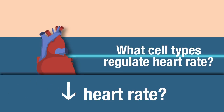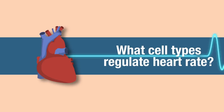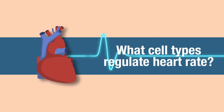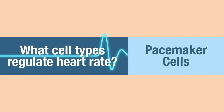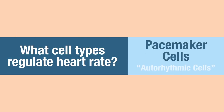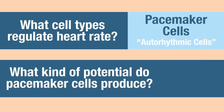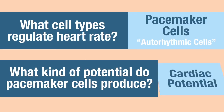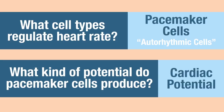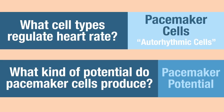Let's talk about what cell types in the heart regulate heart rate. Hopefully you answered pacemaker cells, which are also called auto-rhythmic cells. What kind of potential do pacemaker cells produce? A pacemaker potential.